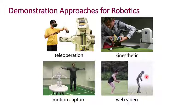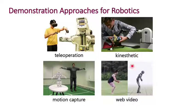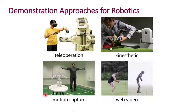Imitation learning, like reinforcement learning, is more general than just robotics. But it's worthwhile to look at how imitations are provided in the robotic setting. For example, you could teleoperate a robot using controllers, you could use kinesthetic teaching — moving the robot's arms to help it figure out how to move — or you could use motion capture to record a human's motions and translate it into a robot, or even learn from third-person web video of how a person is moving.